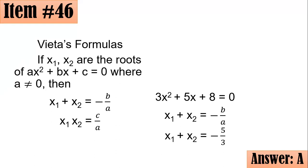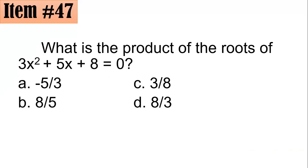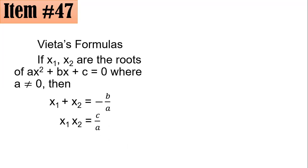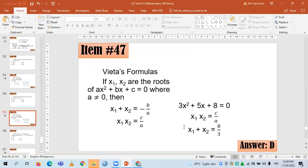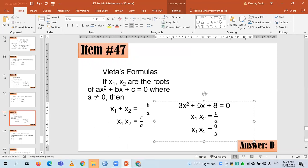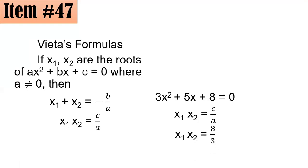Next one, 47. What is the product of the roots of 3x squared plus 5x plus 8 equals 0? It's still the same problem with 46. It's just that we're looking for the product. And the product, based on Vieta's formulas, is c over a. And the c here is 8, and the a here is 3. And by substitution, x sub 1 times x sub 2 is 8 thirds. And that is letter D. I hope you got them correctly as well.